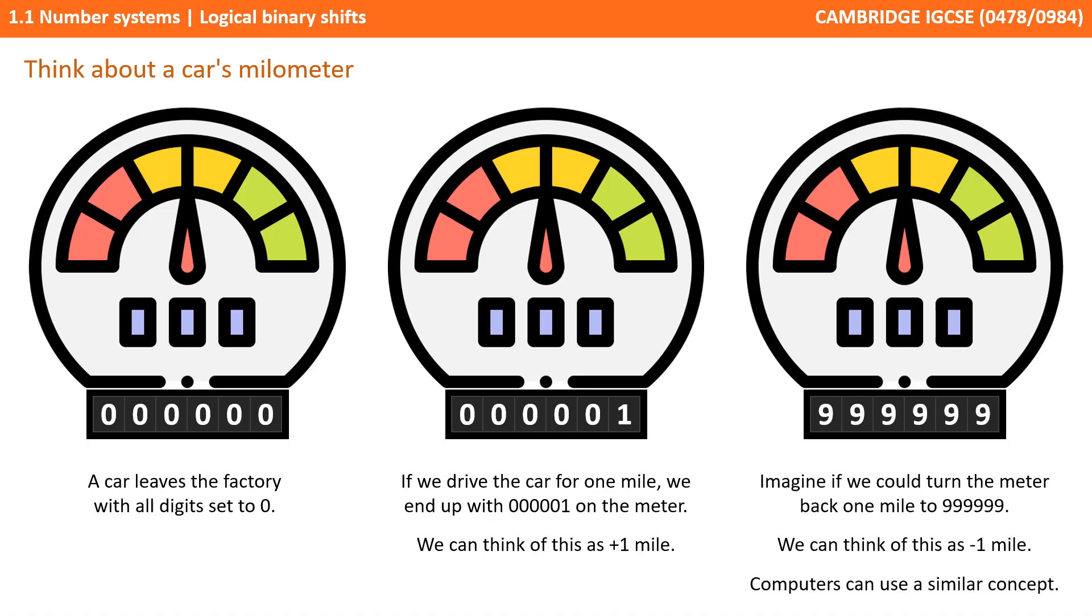Imagine we could turn the meter back 1 mile from the starting position. It would now read 999999, and we could think of this or interpret this as minus 1 mile. Computers are able to use a very similar concept called 2's complement, and we're going to take a look at that now.